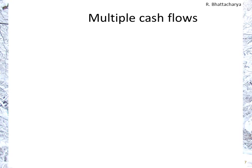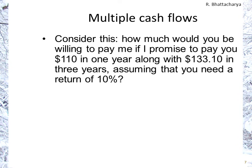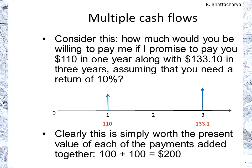If I have multiple cash flows, how do I deal with them? Consider this scenario: I promise to pay you $110 in one year and also $133.1 in three years. How much is that worth to you, assuming you need a 10% return? Hopefully you can see this is simply each payment valued separately and added up. The $110 in one year is worth $100, and the $133.1 in three years is also worth $100, so together that should be worth $200 to you.